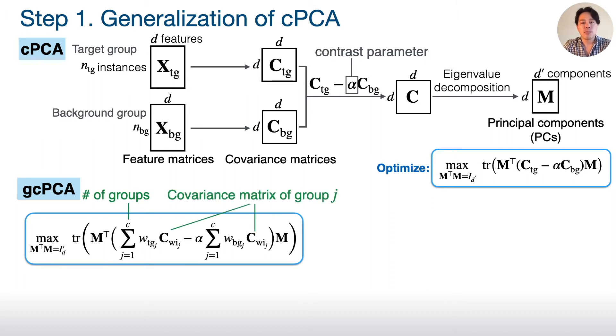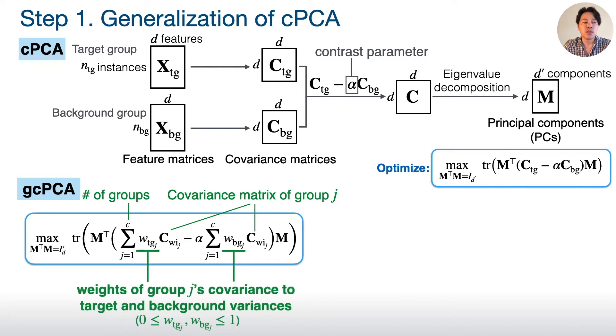The optimization problem with CPCA can be generalized for multiple groups with this equation. Now, we can assign multiple groups covariance matrices for each target and background, with weights for each group.